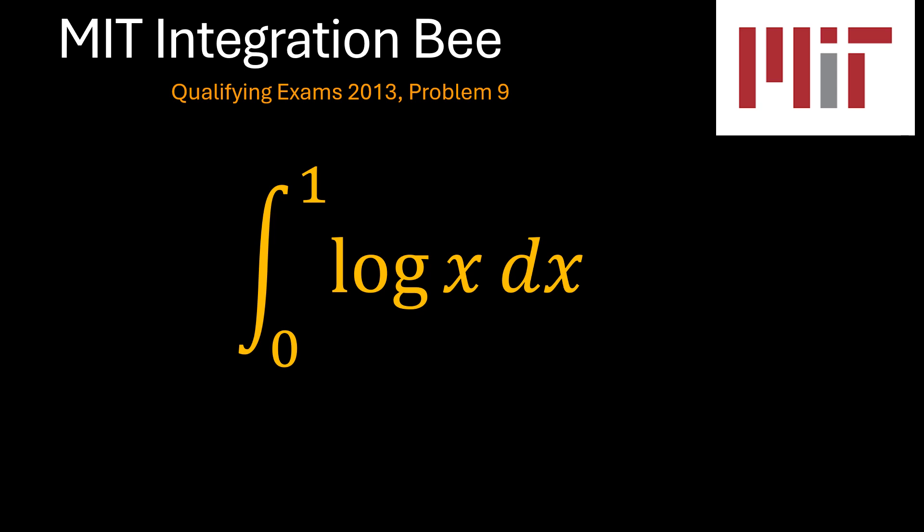This is actually a very easy problem. Let's see how we may be able to solve it. So our problem here is the integral from x equals 0 to x equals 1 of the natural logarithm of x.